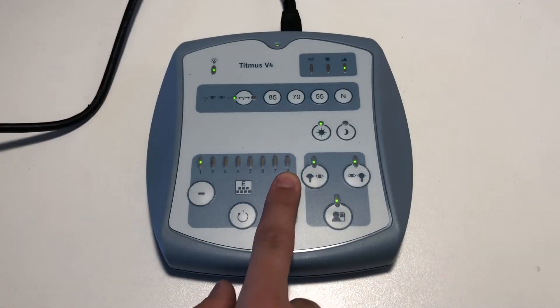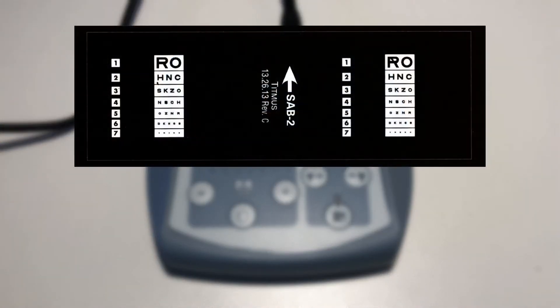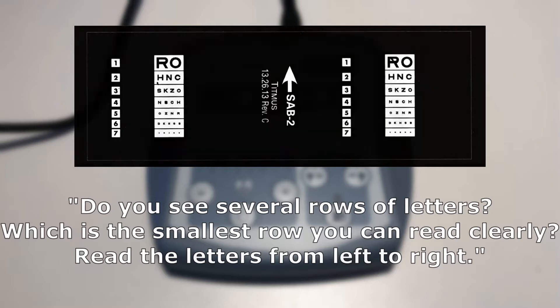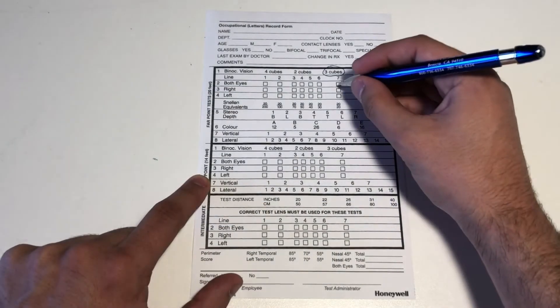Advance the slide to number two by pressing the plus sign in the control panel. This slide tests for visual acuity. Ask the patient, do you see several rows of letters? Which is the smallest row you can see clearly? Read the letters from left to right. In order to pass the test for the first two rows, all letters must be read correctly. For all subsequent rows, one letter may be missed per row. Record the last acuity level the patient was able to correctly read.